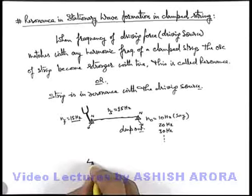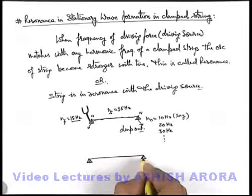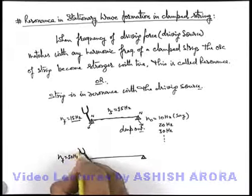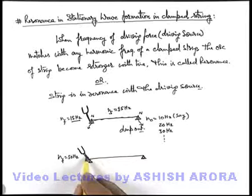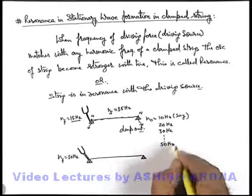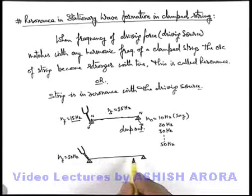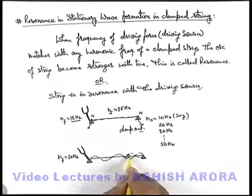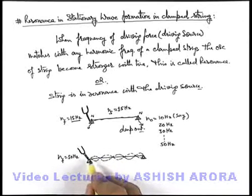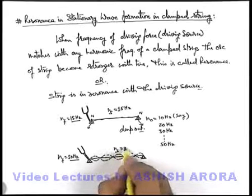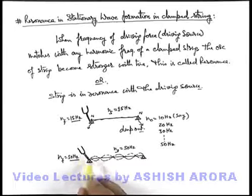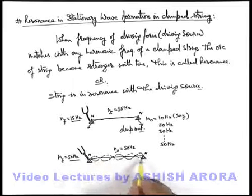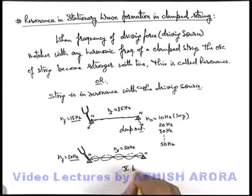In a similar situation, if we bring a tuning fork of frequency 50 Hz close to the string and clamps, and it supplies energy that matches the 5th harmonic of the string — that means at 50 Hz the string can oscillate in stationary waves with 5 loops formed. So automatically, as soon as the energy is supplied by the source, the string will oscillate at 50 Hz. At 50 Hz frequency, the whole energy supplied by the source to the string will be sustained within the 2 clamps — the energy is distributed among the 5 loops — and the string will start oscillating in its 5th harmonic.